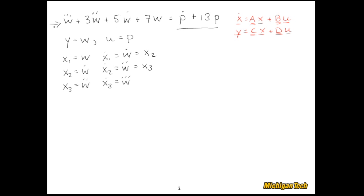Well, we can go up to our original differential equation and start filling that in. So we have negative 3 W double dot. That's a bit of a tongue twister. Negative 5 W dot minus 7 W plus P dot plus 13 P. So far so good.